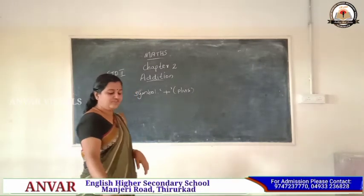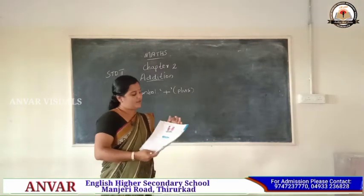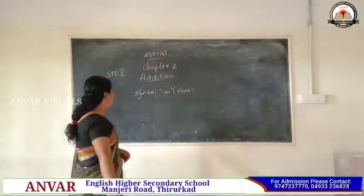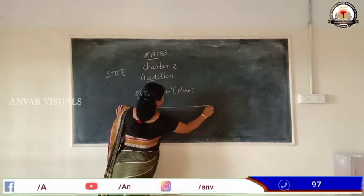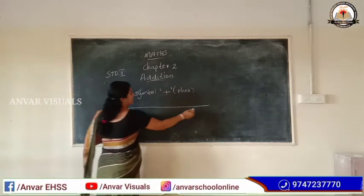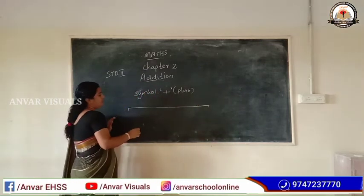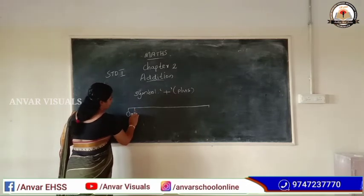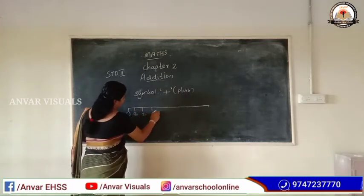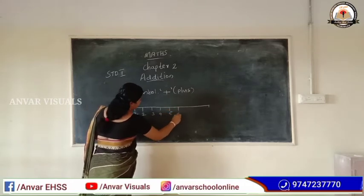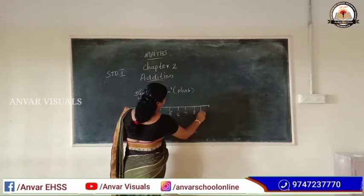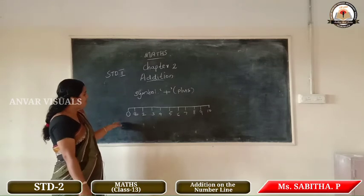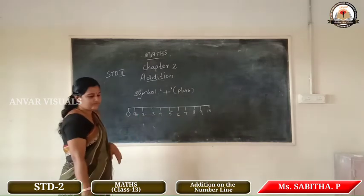Now, addition on the number line — page number twenty-five. What is a number line? A number line is a line where numbers are arranged at particular intervals, starting from zero: zero, one, two, three, four, five, six, seven, eight, nine, ten. This is a number line. Now how do we count on a number line?